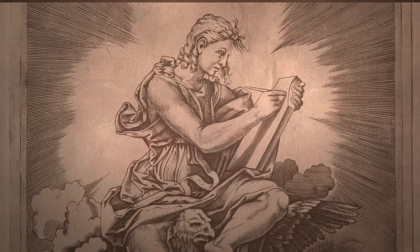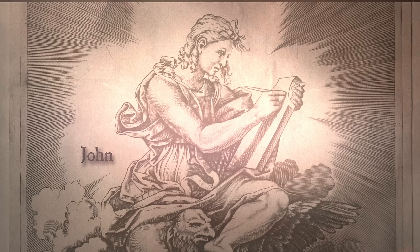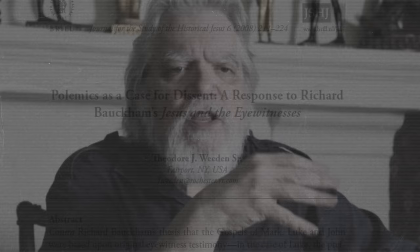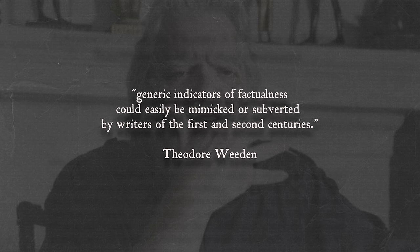In the opening clip of this episode, we saw Robert Price critiquing the use of unintentional patterns to demonstrate reliance on eyewitnesses. In that clip, Price also refers to an article by Theodore Whedon, in which Whedon endorses the claim that quote, generic indicators of factualness could easily be mimicked or subverted by writers of the first and second centuries, end quote.